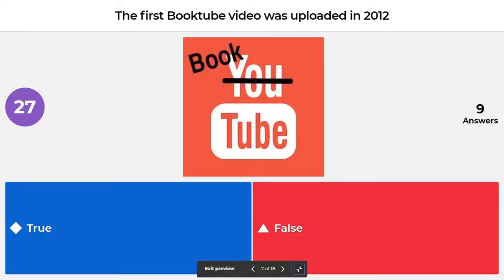Another true or false: the first booktube video was uploaded in 2012. The correct answer is false. My research says that the first booktube video was uploaded in 2010. My apologies if it's not correct, but the internet told me 2010 so I'm sticking with that. If anyone knows differently, please let me know in the comments.